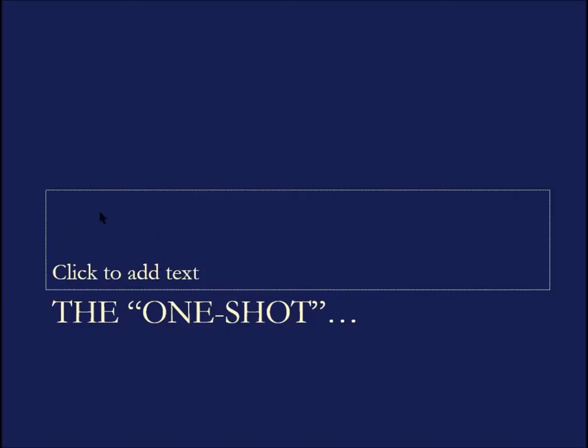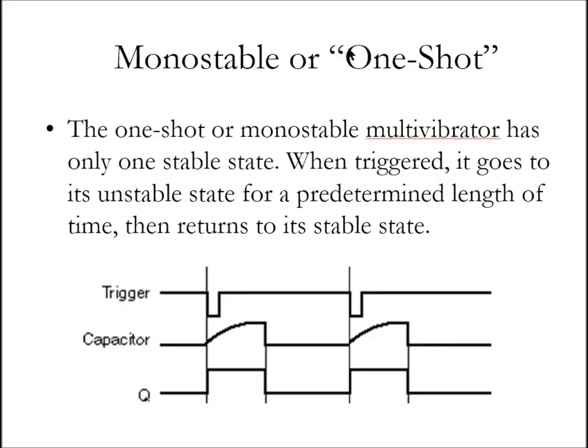Next, let's look at one-shot operation. The one-shot, otherwise known as the monostable, monostable means one stable state. Its stable state is low. It has a temporary state that is triggered by a falling clock edge. Depending on the size of the components you put on this thing, determined by RC time constants, that determines the width of this monostable pulse.